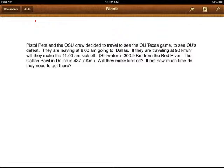We are going to look at an example of a typical physics problem. In this problem, we have Pistol Pete, and the OSU crew decided to travel to the OU-Texas game to see OU's defeat. That's because OSU and OU have a rivalry like A&M and UT. They are leaving at 8 a.m., going to Dallas. If they are traveling at 90 kilometers per hour, will they make the 11 a.m. kickoff? Stillwater is 300.9 kilometers from the Red River, and then another 437.7 kilometers to the Cotton Bowl.